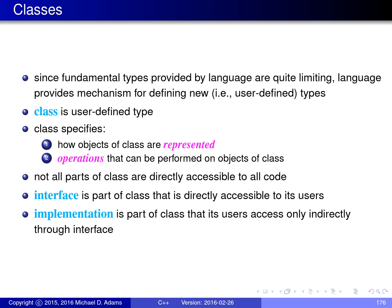A class specifies essentially two things. First, how objects of the class are represented — in other words, the underlying state or data associated with the class objects. And also, it specifies the operations that can be performed on objects of the class.